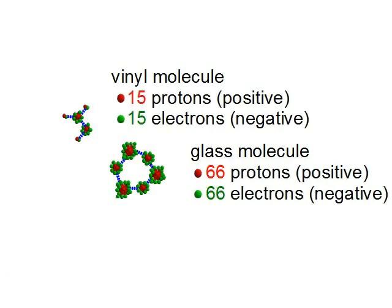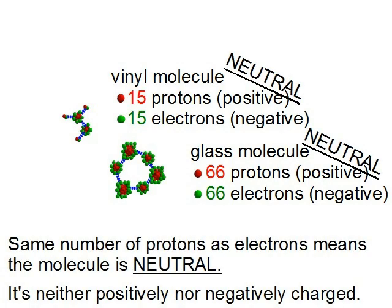If we add up all the parts of the atoms, vinyl is made up of 15 positive protons and 15 negative electrons. Glass is made up of 66 positive protons and 66 negative electrons. If there are the same number of protons and electrons in a molecule, then the molecule is neutral. It's neither positively charged nor negatively charged.